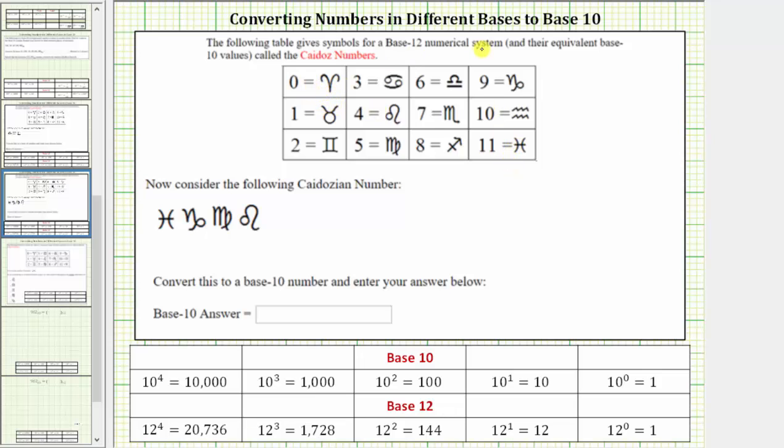And again, because it is base-12, each place value is a power of 12 as shown below. Starting from the right and working left, we have the 12 to the zero or ones place value, 12 to the first or 12's place value, 12 to the second or 144's place value, 12 to the third or 1728's place value, and so on.